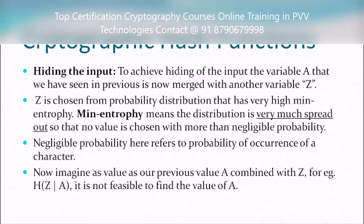Negligible probability here refers to the probability of occurrence of a character. Now imagine the previous value 'a' combined with 'z' such that hash of z and a — when it is found, it is not feasible to find the value of 'a'.